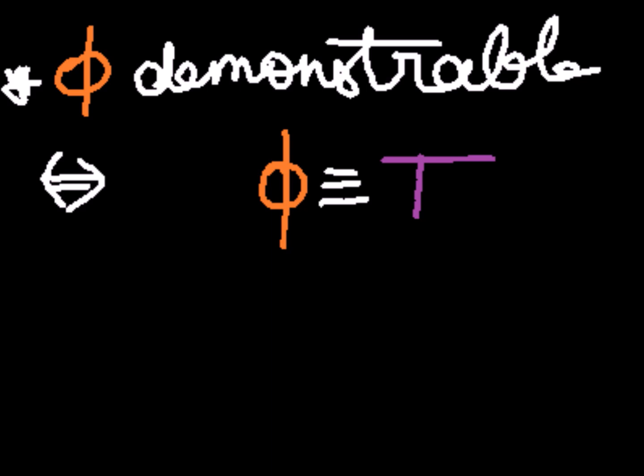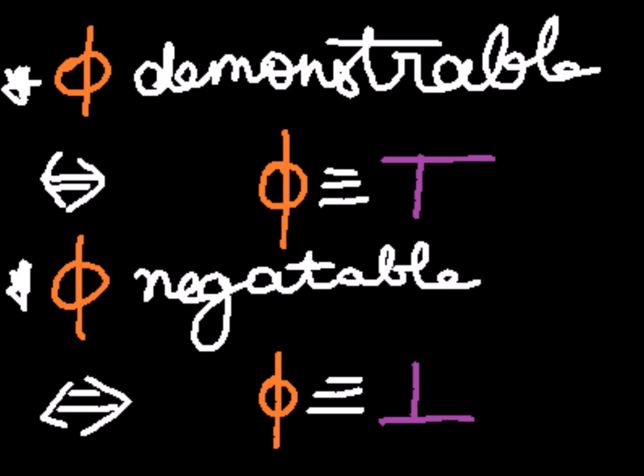We can write that a proposition is demonstrable by saying it's equivalent logically to tautology, which is the name we give to propositions that we can conclude even without any real condition. For this, we have a generic tautology symbol. Likewise, we can write that a proposition is negatable by saying it's logically equivalent to any contradiction, which is the name we give to propositions whose negation is always deducible. Which, to make the bridge with what we just saw, just means that the negation of that statement is a tautology. We have a generic symbol for contradictions, which is called the falsum.